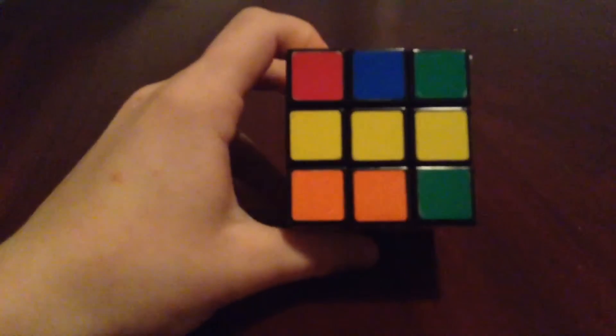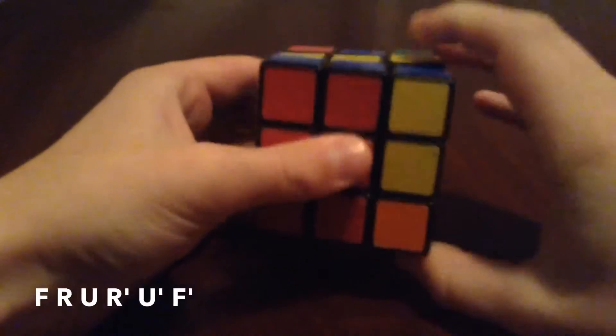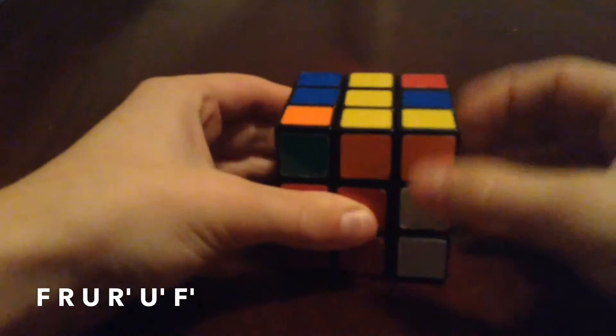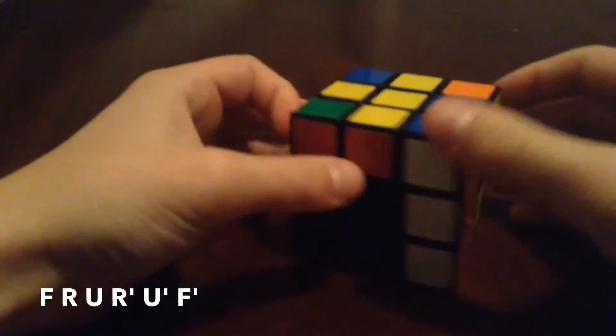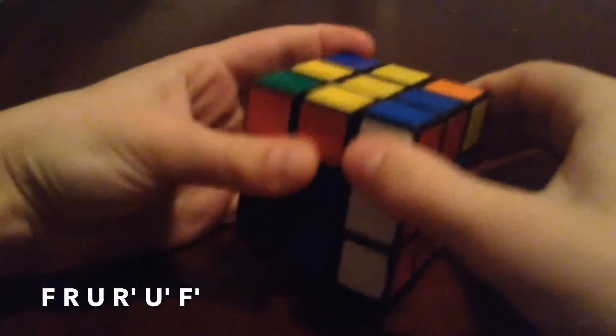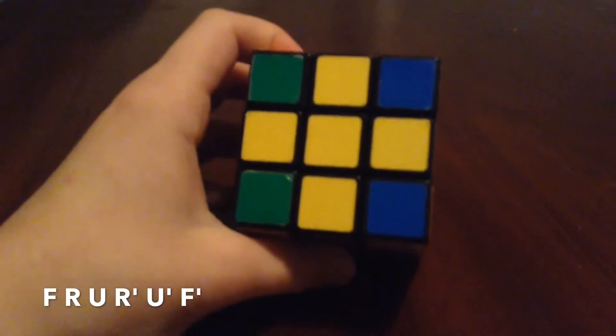If there is just a bar, you want to do this algorithm: F, R, U, R counterclockwise, U counterclockwise, and then F counterclockwise. And again, you will have the cross.